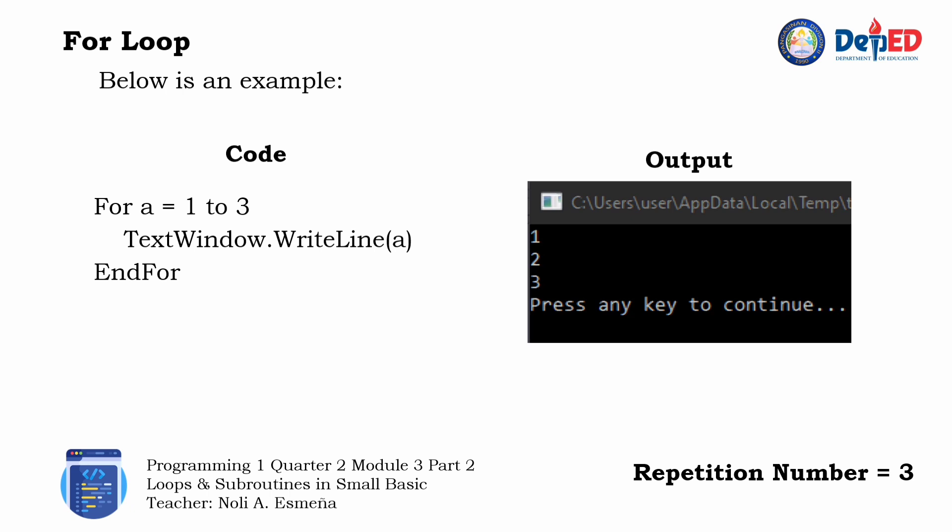We can see in the output of the program that the value of a is printed three times. After number three is printed, the loop ends, because a has only three values and nothing will be displayed after number three.